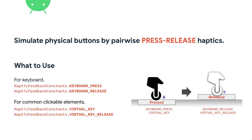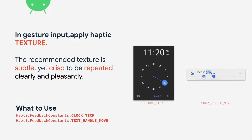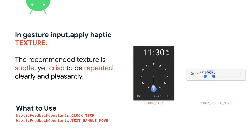For example, for keyboard, you can find KEYBOARD_PRESS and KEYBOARD_RELEASE effects. For any other clickable element, you can also find another pair, such as VIRTUAL_KEY and VIRTUAL_KEY_RELEASE. Then, what about gesture? Haptic for gesture is usually happening in a do-while fashion.